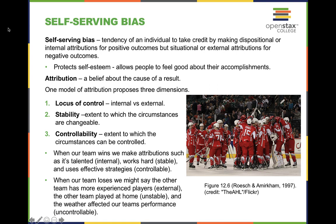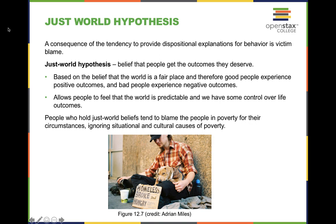The just world hypothesis states that some people believe they get the outcomes they deserve in life — if you do good, you'll eventually get good back, and if you do bad, eventually that bad karma may come back to you. Remember, this is a hypothesis, not a law of science. Do you think the world is ultimately a just place? Let me know in the comments.